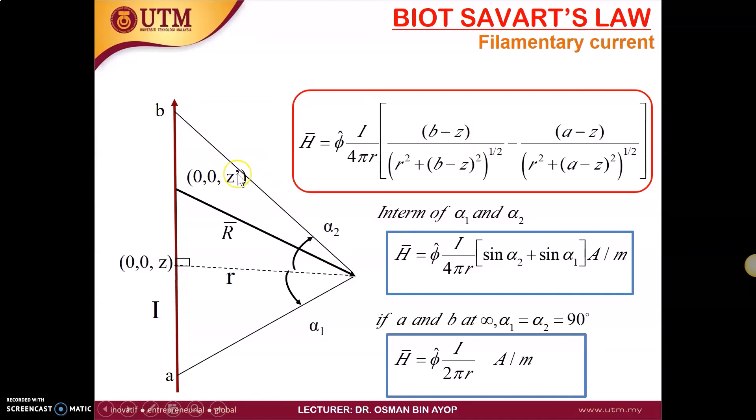And this part we have minus A minus Z, or we can reverse as plus Z minus A from here to here. So Z minus A divided by R squared plus (A minus Z) squared, which is this part. So this form is basically sine alpha 1. This is our conclusion from the analysis of filamentary current.